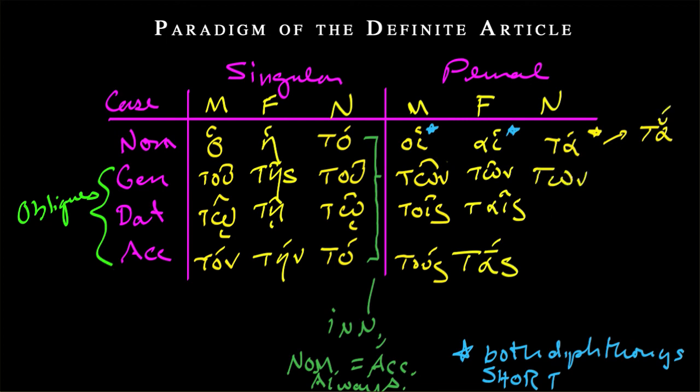But again, in the oblique cases, we're getting similarities between neuter and masculine. So again, tōn. And then over here we'll have tois.